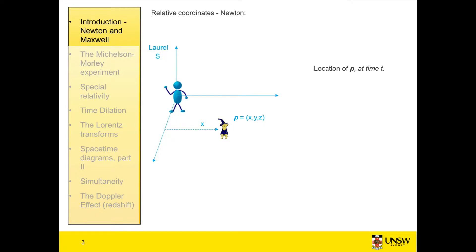So we can write the location of the dog, which is P, at some time T, in terms of the coordinates of Laurel's system, which is x, y, z, and T.